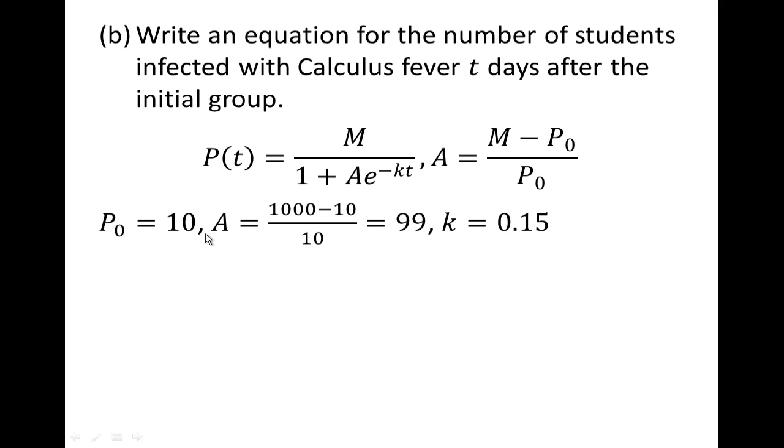So p0 is equal to 10, there were 10 students who were initially infected, a is 1,000 minus 10 over 10, that's 990 divided by 10 is just 99, and k is equal to 0.15, remember that was the number that was out in front of the p in our factored form of the differential equation. So we plug everything in, it's m divided by 1 plus a e to the negative k. The k in our differential equation is positive, but this one turns out to be negative, negative 0.15 t.